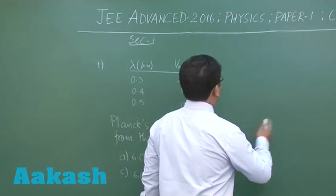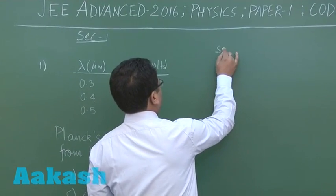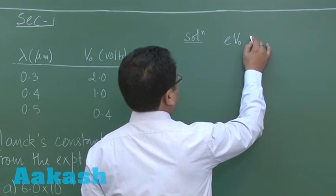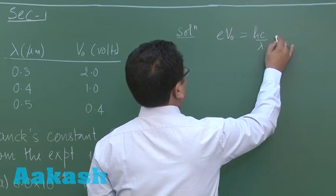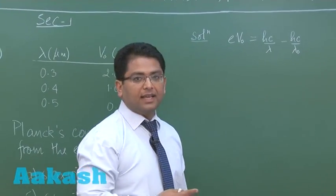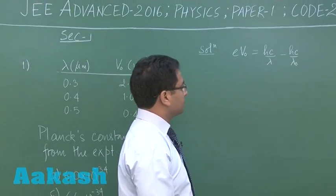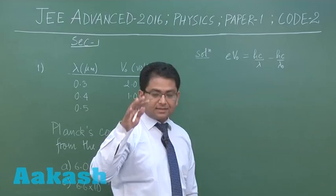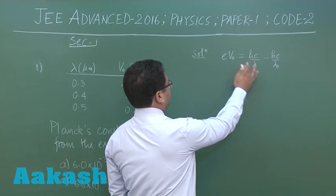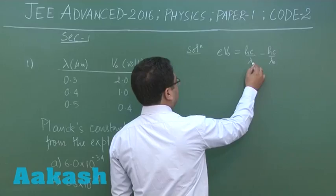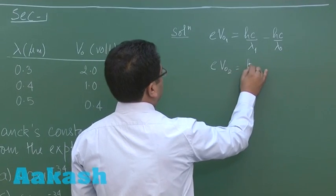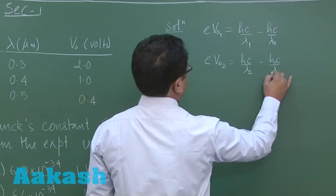You all know the famous photoelectric experiment, so I won't stress much on that. The stopping potential, if I denote by V naught, equals hc by lambda minus hc by lambda naught, where lambda is the wavelength of the irradiating light and lambda naught is the threshold wavelength, which depends purely on the nature of the metal. Since the metal is the same, lambda naught is constant. For different wavelengths, the stopping potential takes different values, so we write: eV naught 1 = hc/λ1 − hc/λ0, and eV naught 2 = hc/λ2 − hc/λ0.